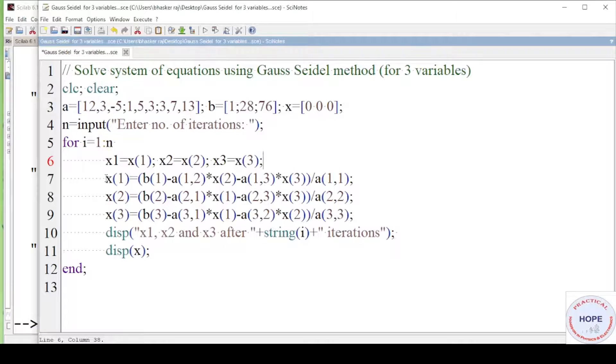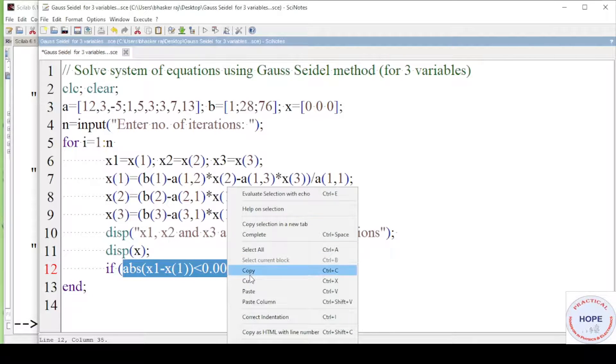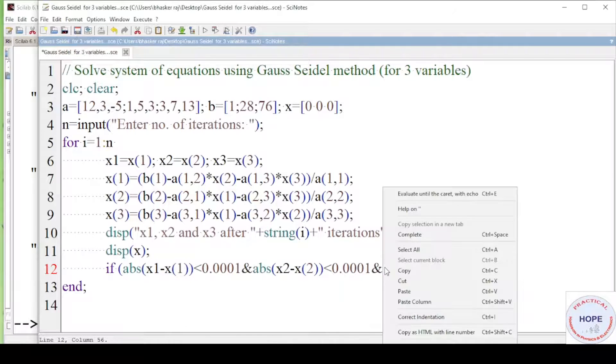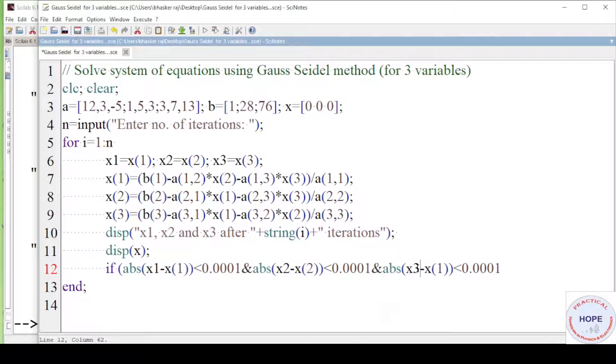Now we can check if absolute value of x1 minus x bracket 1 is less than 0.0001 and we need to write for x2. So let's copy and paste. Change x1 to x2 and this 1 to 2 then and again paste. Change this to x3 and this also 3 bracket close. So this is the condition and if this condition is met that is the difference between all the previous values of x and the present value of x is less than 0.0001 then we will have to break this for loop. Enter break and again we have to write end.